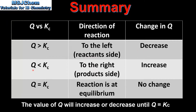If Q is less than Kc, the reaction will proceed to the right — that's the product side — and the value of the reaction quotient Q will increase. And finally, if the value of the reaction quotient Q is equal to the value of the equilibrium constant Kc, then the reaction is at equilibrium.